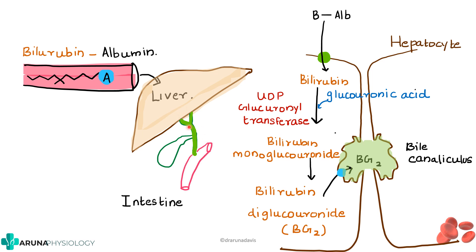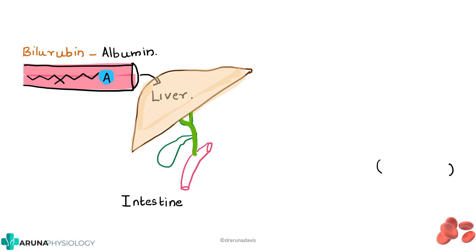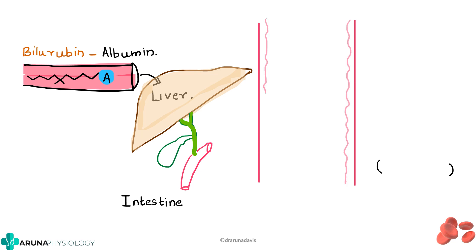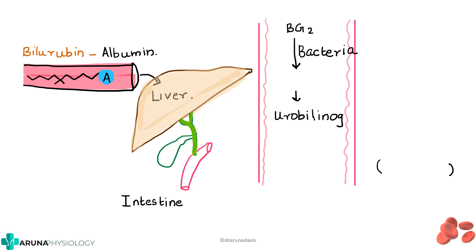Through the bile, the conjugated bilirubin reaches the intestine. In the intestine, it is acted upon by bacteria present inside the intestine, which converts this bilirubin into urobilinogen.